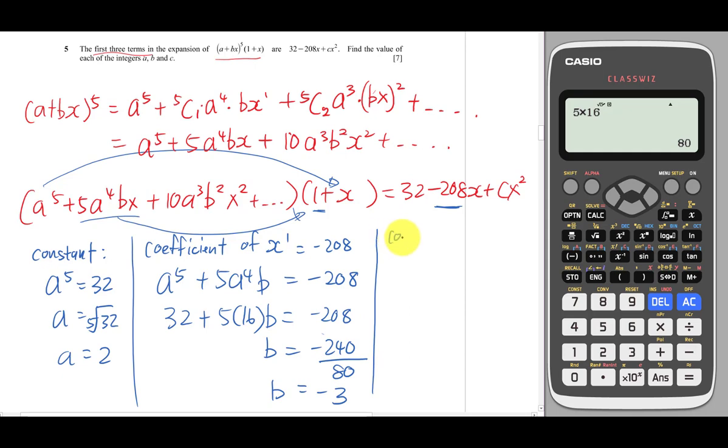Lastly, I'll compare the coefficient of x^2, which equals c. I need to rethink which terms give x^2. a^5 times anything here can't get x^2. But 5a^4·bx times x gives x^2. This one times 1 also gives x^2.